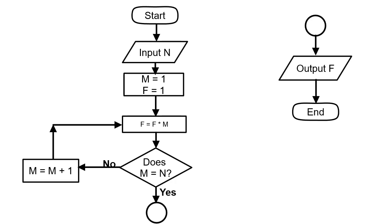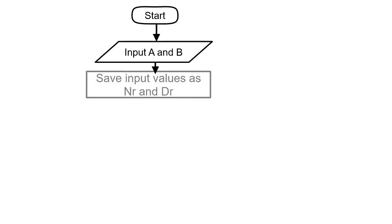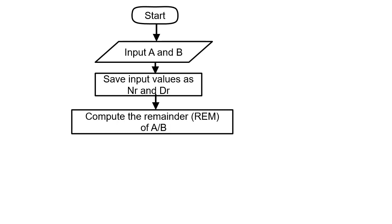The last example is computing the HCF of two numbers. We start with the terminator start, then we input data — inputs a and b. After that, the next step is a process: save the input values as nr and dr, representing the numerator and denominator respectively.